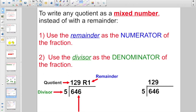So here, if I had a quotient that was originally 129 remainder one, it says use the remainder as the numerator. So I would have 129 and a fraction of one. Use the divisor as the denominator. The divisor is the number you're dividing by, right? So instead of 129 remainder one, if they want you to write it as a mixed number, write 129 and one fifth.